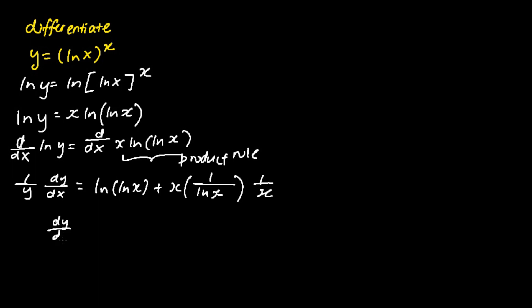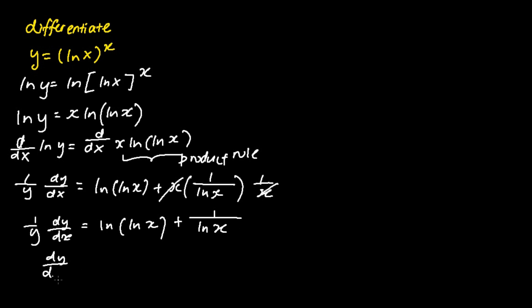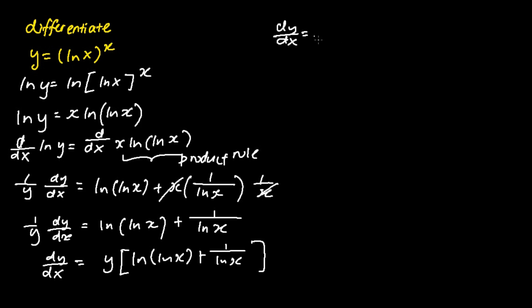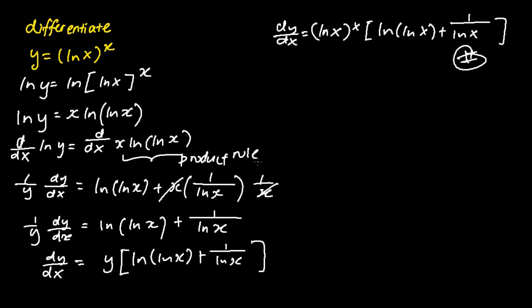We then simplify the equation. On the second term, the x terms cancel, leaving 1/ln x. Multiplying both sides by y to make dy/dx the subject gives dy/dx equals y times [ln(ln x) + 1/ln x]. Substituting y equals ln x to the power of x, the final answer is dy/dx equals (ln x)^x times [ln(ln x) + 1/ln x].